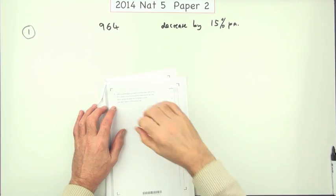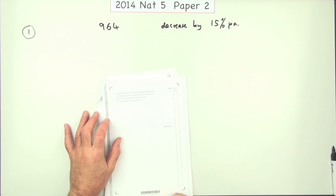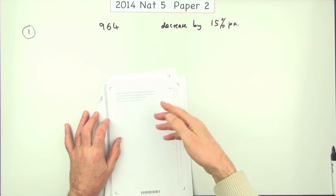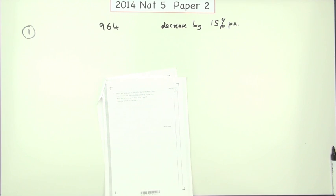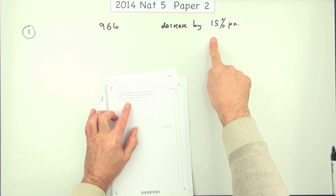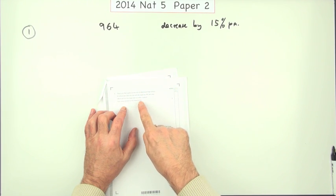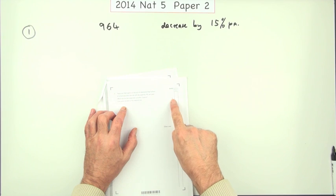Number one from the 2014 National 5 paper is about percentage increase or decrease over a certain number of years, usually about three years. This one is a decrease of 15% after three years, and you have to round your answer to the nearest ten. There's only three marks altogether.